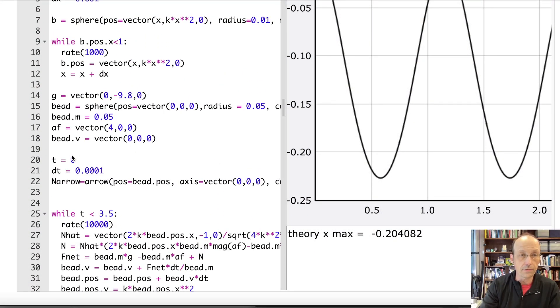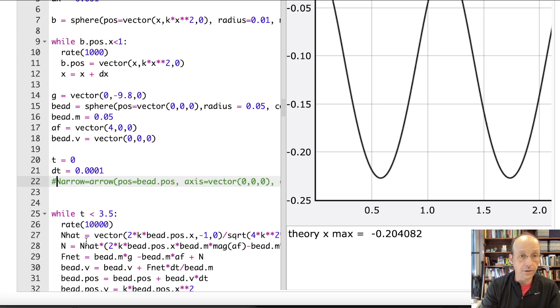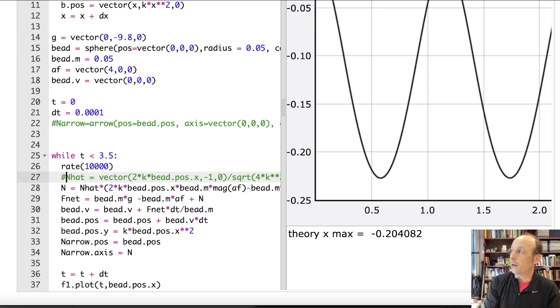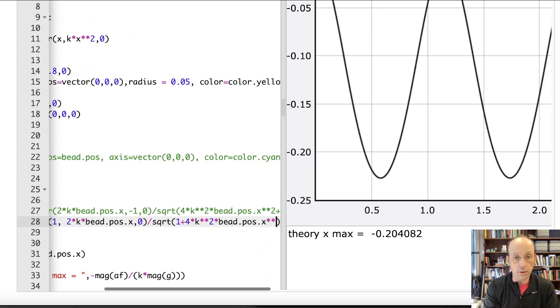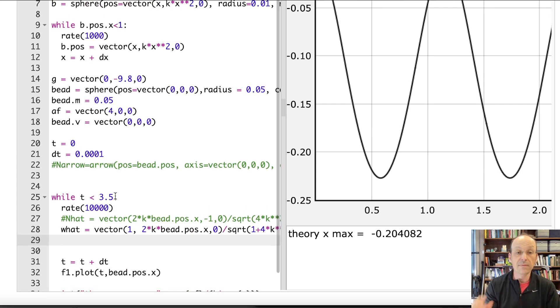Okay. So that's all fine. b vector. That's all fine. n arrow, I don't really need that. Let's get rid of that. Let's get rid of this n hat stuff. Get rid of this. Let's delete it. Let's just delete all the stuff. Okay. So the first thing I want to do is to calculate W, W hat. So I'm going to say W hat equals the vector one, two times K times X, which is b dot pos dot X zero. And that's divide by the square root of one squared plus four times K squared times b dot pos dot X squared. Okay. So that's my W hat direction. That's my W hat. And it's going to change every time I move.